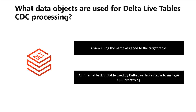If you add data manually to the table, the records are assumed to come before other changes because the version columns are missing.